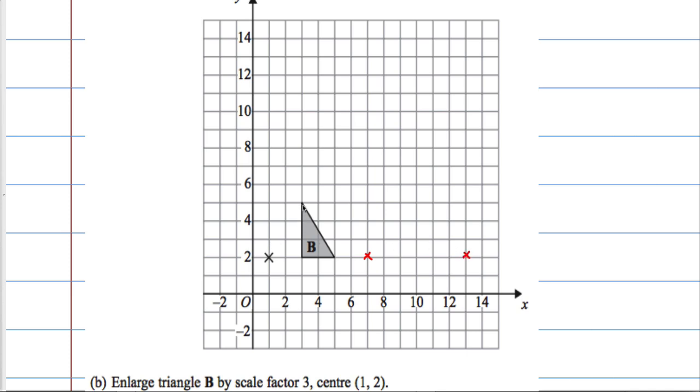And then this vertex up here, I need to go 3 up and 2 across. Which means I'll go 9 up and 6 across. So, 3, 6, 9 and 2, 4, 6.